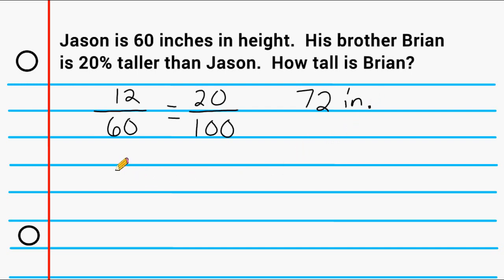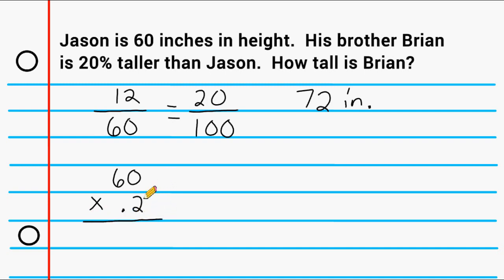Another way we could figure out what 20% of 60 is, is by taking 60 and multiplying it by 20% represented as a decimal. And 20% in simplest form as a decimal is 0.2, because if we were to take the decimal point and move it two spaces to the right, that would give us 20%. So multiplying 0.2 by 60: 2 times 60 is 120, and there is one number after the decimal, so our decimal point goes here, giving us 12 inches.